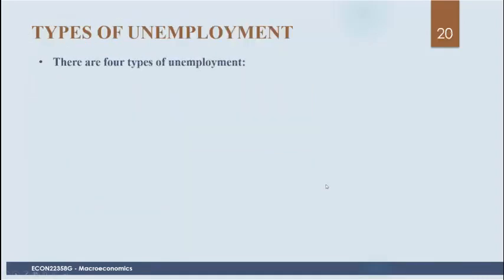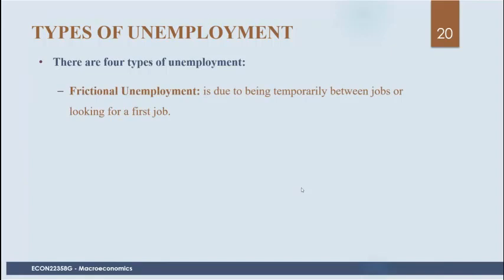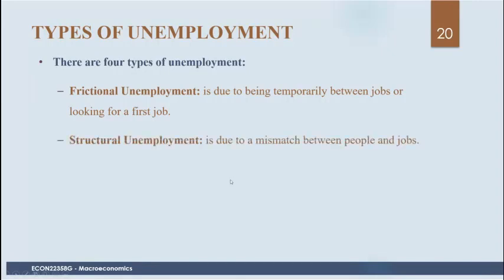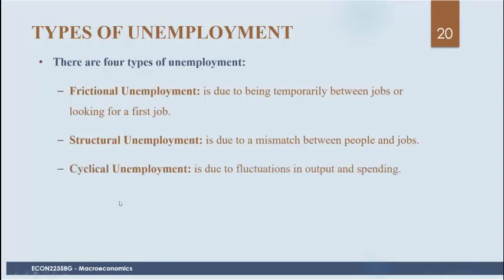There are different types of unemployment. Frictional unemployment results from someone switching jobs — at any point in time, some people are temporarily between jobs or looking for their first job. Structural unemployment is due to a mismatch between jobs and skills — someone's skills may have become obsolete and they lost their job. Cyclical unemployment is due to the business cycle or fluctuations in overall economic activity, and is high in recessions.